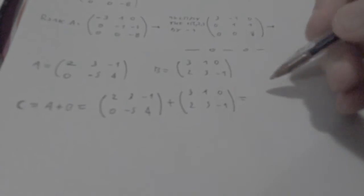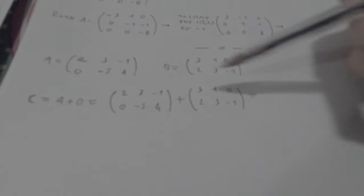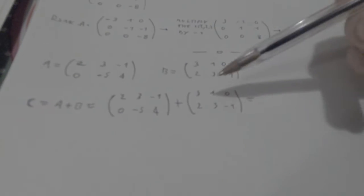And the addition between those two matrices is just going to be adding each and every number. 2 plus 3, 3 plus 1, negative 1 plus 0, and so on.